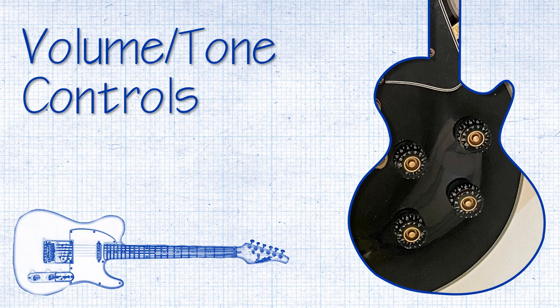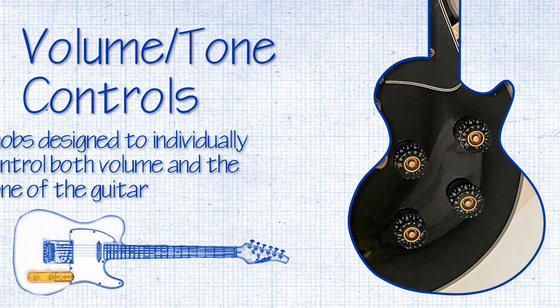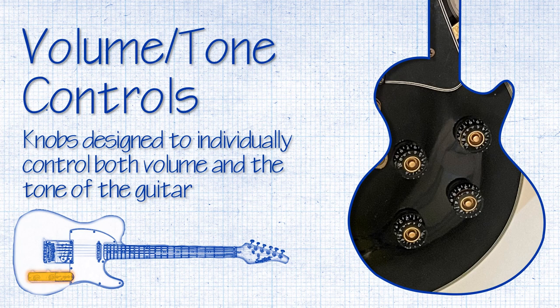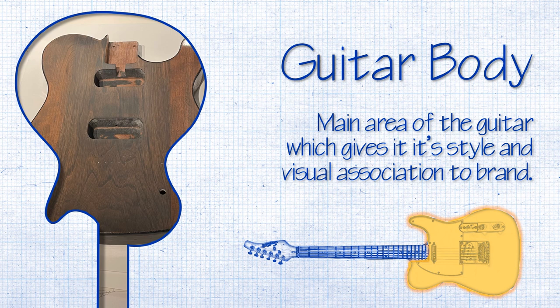Volume and tone knob controls are designed to individually control both volume and the tone of the guitar by increasing or decreasing signal. The guitar body is the main bulk of the instrument. It can affect tone and houses the guitar electronics: output jack, tone and volume controls, pickup, bridge, and tailpiece.